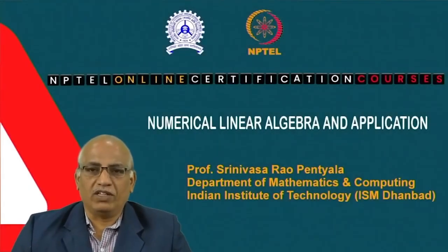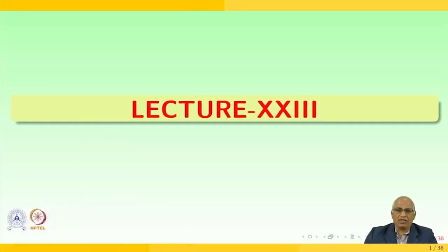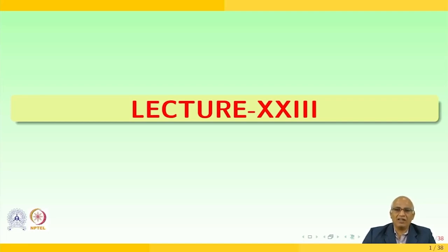Hello, welcome to everyone for the course on numerical linear algebra application. Today we are going to have the 23rd lecture. Before going to this lecture, let us quickly recall what we did in the previous lecture. We have seen Gaussian elimination with partial pivoting, Gaussian elimination without partial pivoting, how the solution gets influenced and how the error could be minimized. We have seen how Gaussian elimination without pivoting and with complete pivoting affects the solution during numerical computation.